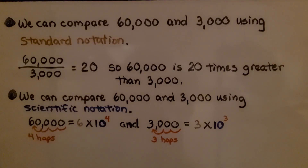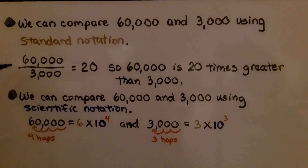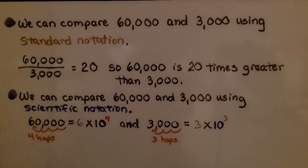We can compare 60,000 and 3,000 using standard notation. We put 60,000 as the numerator and 3,000 as the denominator and write it as a ratio. 60,000 divided by 3,000 is equal to 20, so 60,000 is 20 times greater than 3,000.